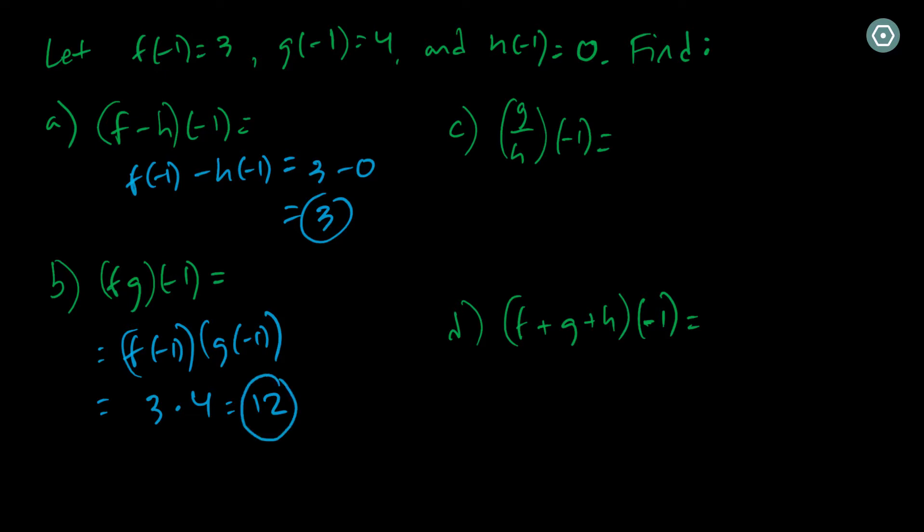So the resulting output will be 12. In the f times g function, the output is 12 when you insert negative 1.